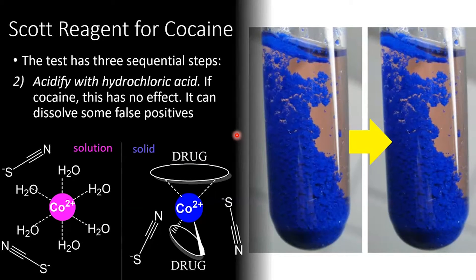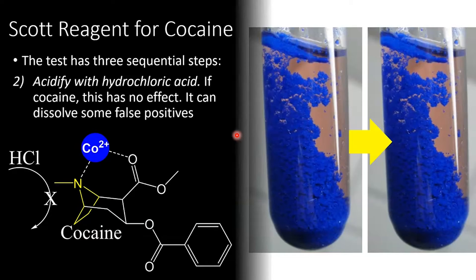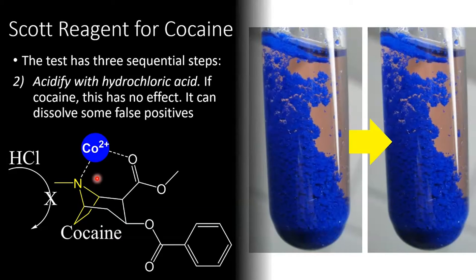Next, we break the second ampoule, which contains nothing but hydrochloric acid. The expected result for cocaine is that nothing happens. The point of this step is that hydrochloric acid can dissolve or break down certain false positives that would initially give a blue result. Looking at cocaine coordinated to the cobalt, in order for the hydrochloric acid to break it apart, it would need to gain access to the nitrogen-to-cobalt bonding. But cocaine is a relatively big molecule — the atoms shown in yellow block the approach of the hydrochloric acid and prevent it from accessing the bonding region. So cocaine coordinated to cobalt is stable under acidic conditions, whereas many false positives that also bind to cobalt don't bind as strongly, so the hydrochloric acid can break apart that binding and cause the blue precipitate to disappear.